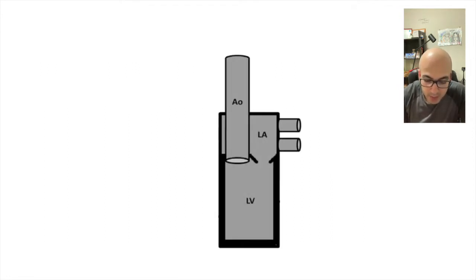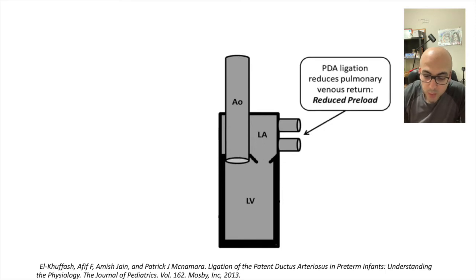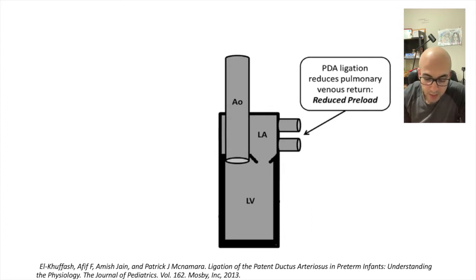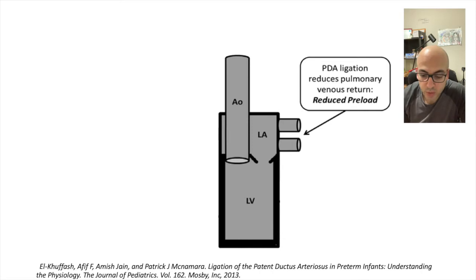To understand the pathophysiology, let's look at the left heart in this diagram. A few factors contribute to PLCS. The first is that when we ligate the PDA, this is going to reduce the pulmonary venous return. As discussed in the previous video, a hemodynamically significant PDA exacerbates pulmonary venous return back to the left side. Ligation therefore reduces pulmonary venous return, representing a reduced preload on the LV.